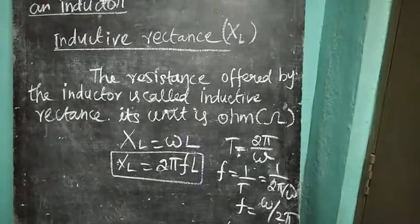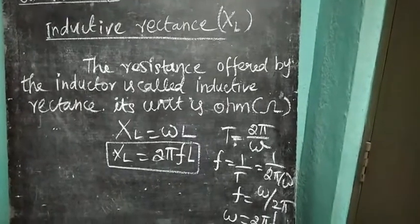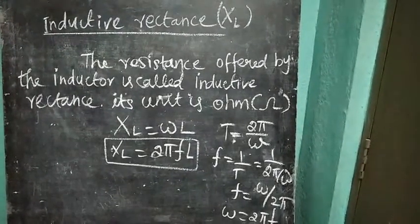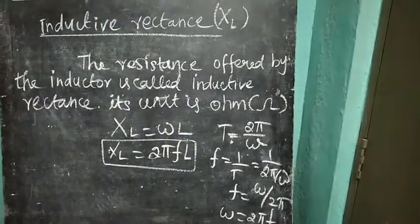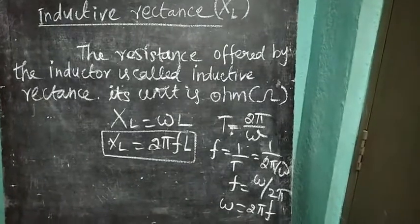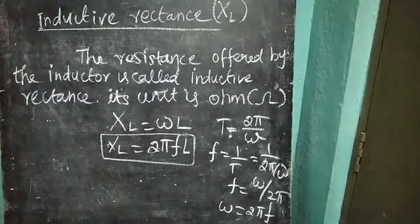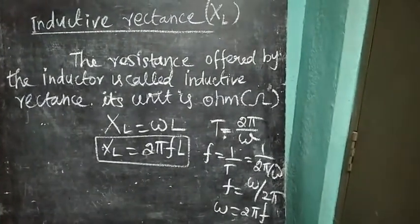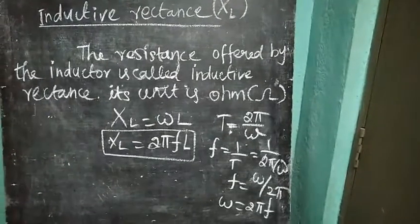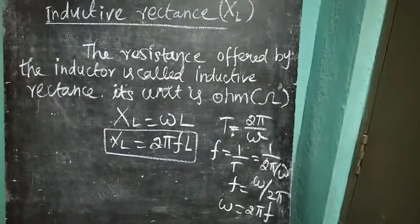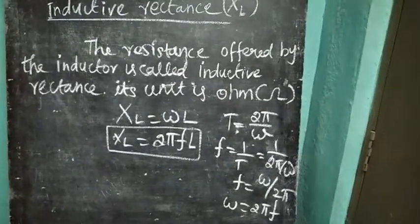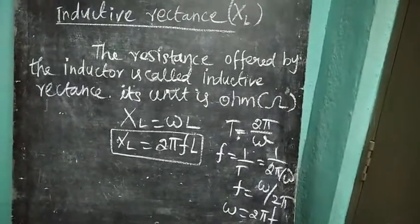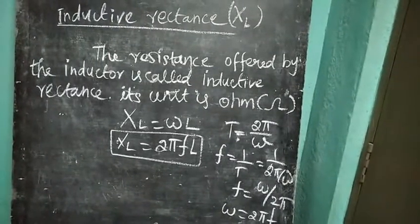The time period T is equal to 2 pi by omega, and frequency F equals 1 by T, that is omega by 2 pi. So F equals omega by 2 pi, which gives omega equal to 2 pi F. Substituting this omega value into the XL equation, XL is equal to 2 pi F L.